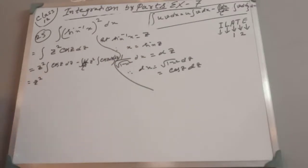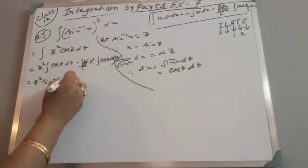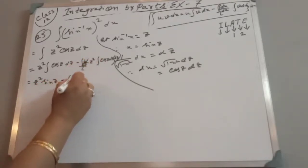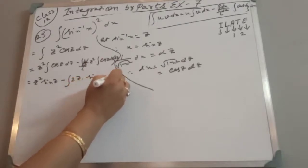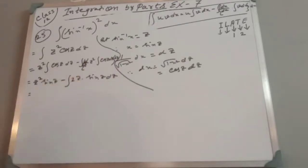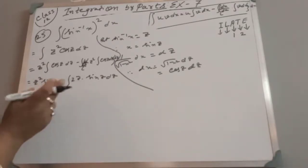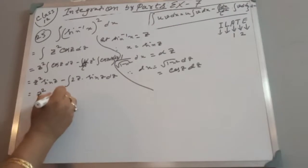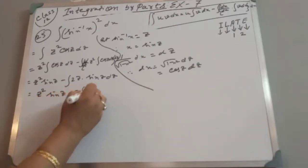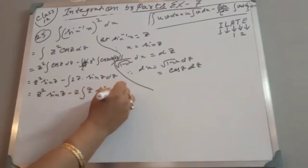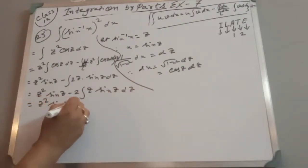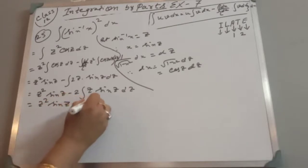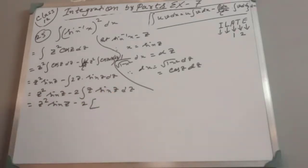∫cos z = sin z, so we get z² · sin z. Now this remaining part is again a product rule. We take 2 outside the integration sign: z² sin z − 2∫z · sin z · dz.